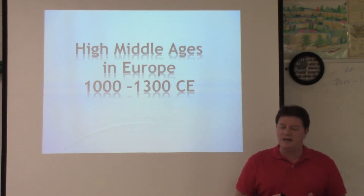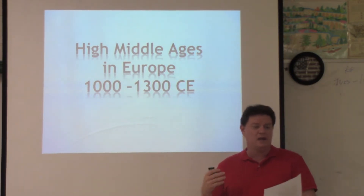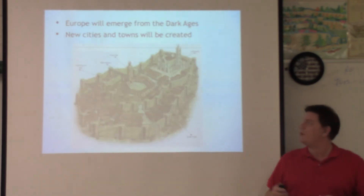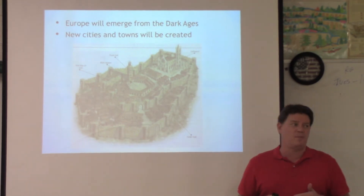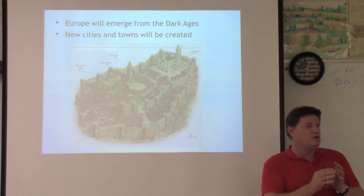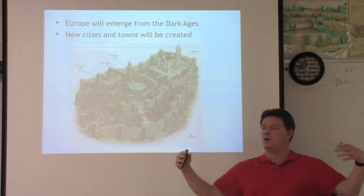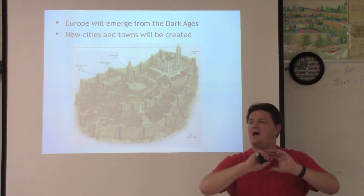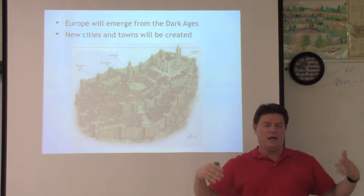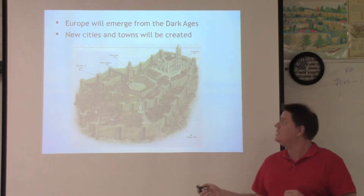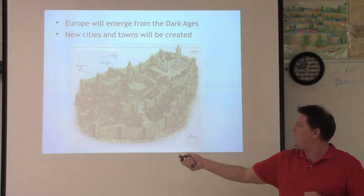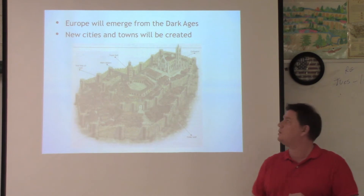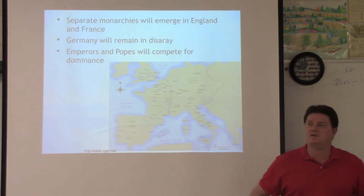This brings us to the high Middle Ages, from about 1,000 to 1,300, right before the Renaissance. A couple things are going to happen. Number one, Europe is going to emerge from the Dark Ages, and new cities and towns are going to be created. We're going to break out of this old castle mentality, and a new order is going to come about in Europe. Before we had the church in the middle and the castle, but we're now going to build a whole town like Rothenberg, the one I showed you guys on the video.